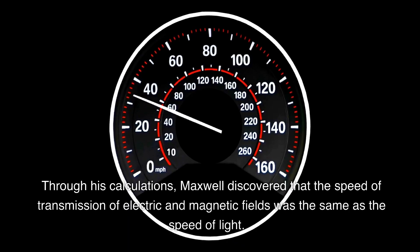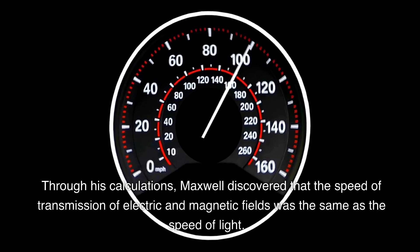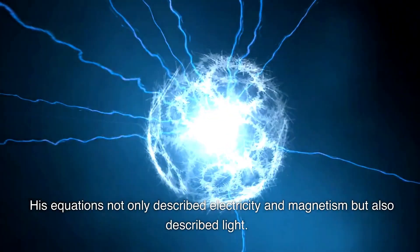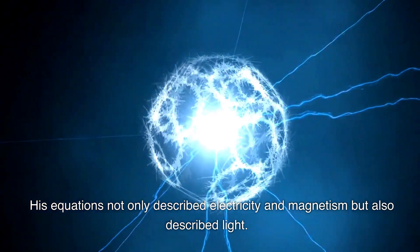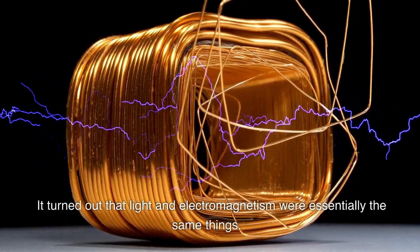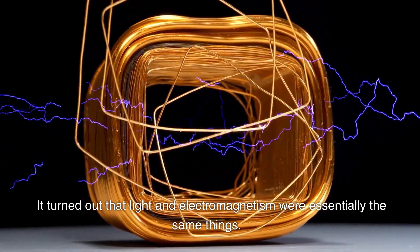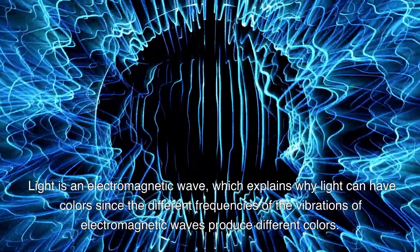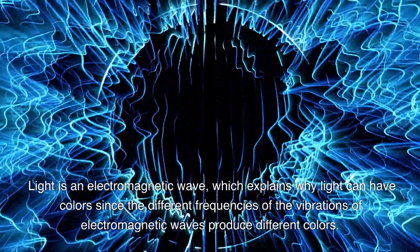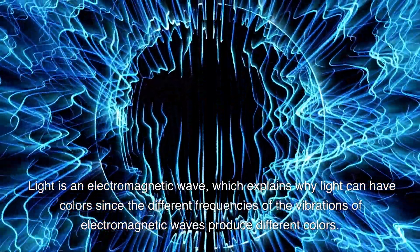Through his calculations, Maxwell discovered that the speed of transmission of electric and magnetic fields was the same as the speed of light. His equations not only described electricity and magnetism, but also described light. It turned out that light and electromagnetism were essentially the same things. Light is an electromagnetic wave, which explains why light can have colors since the different frequencies of the vibrations of electromagnetic waves produce different colors.